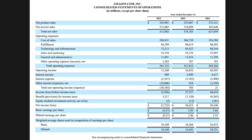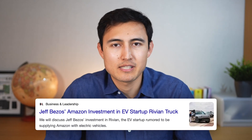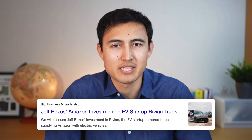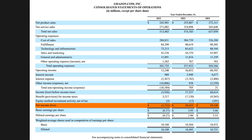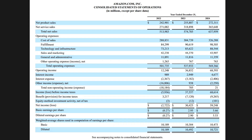Following that is income taxes, shown here as a provision for income taxes because it's an estimate rather than the actual amount they'll pay. There is also one line item called equity method investing activity, net of tax. This is when Amazon invests in another company but doesn't own the majority — for example, they invested about 17% in Rivian, so they recognize their portion of Rivian's gains or losses in their earnings. Finally, that takes us to the net income figure, also known as the bottom line.